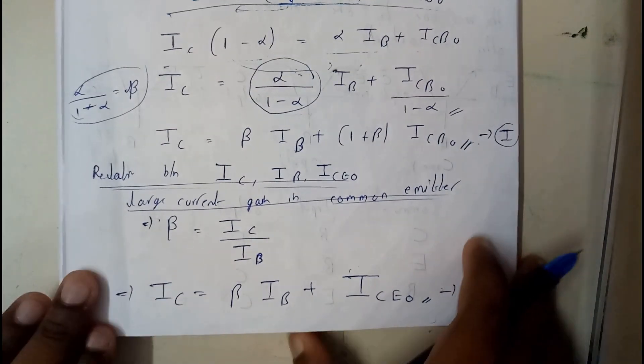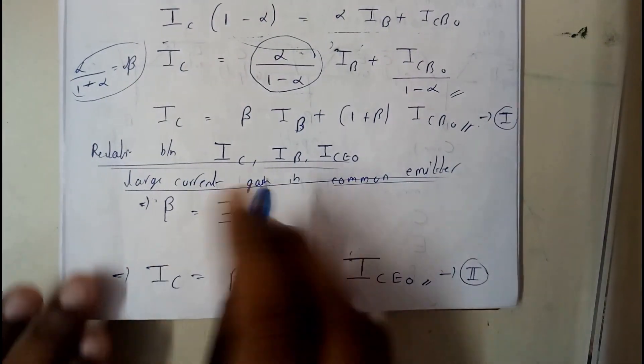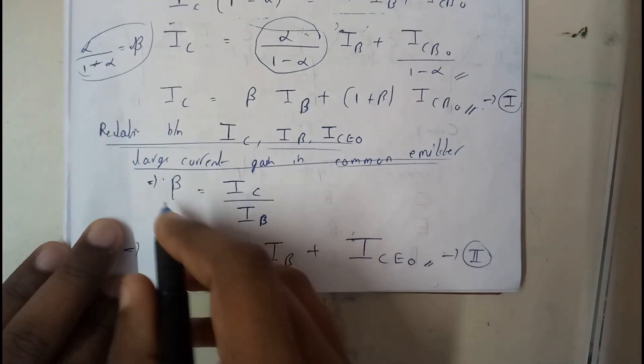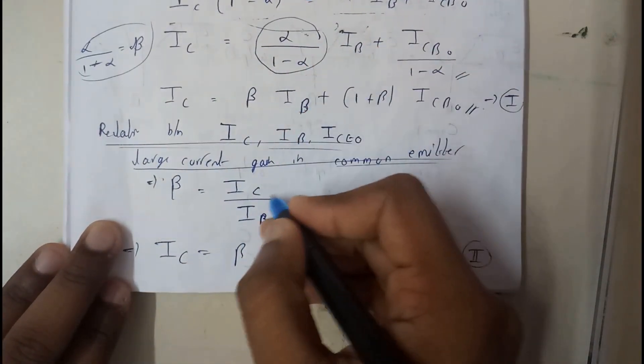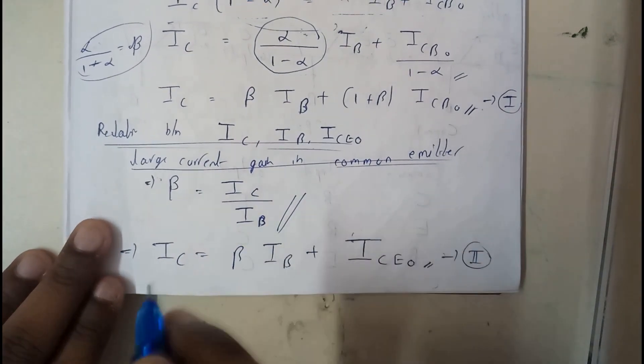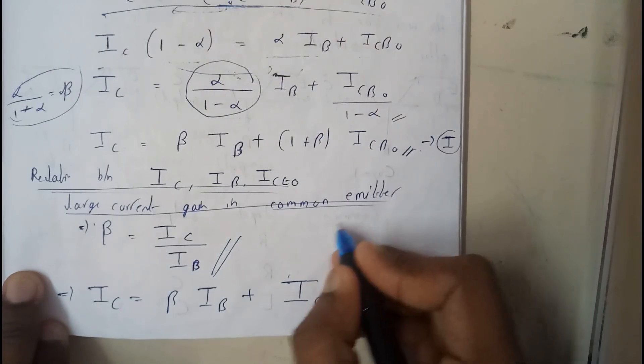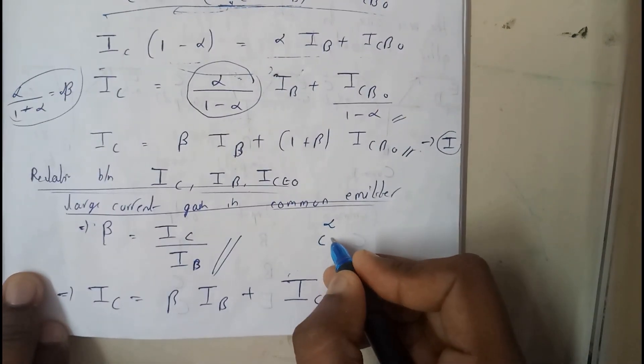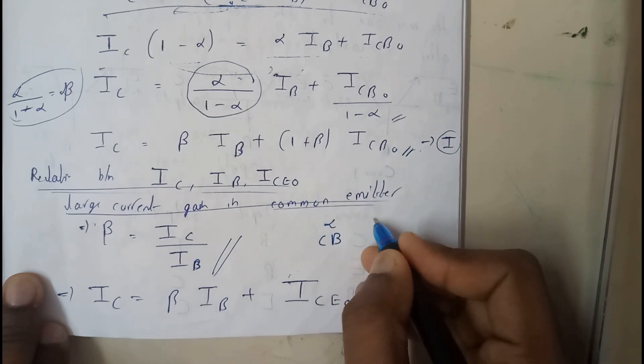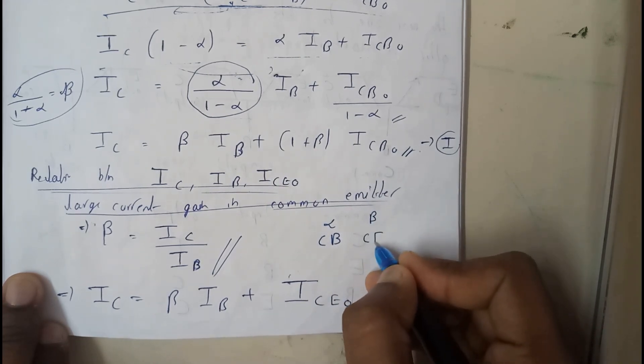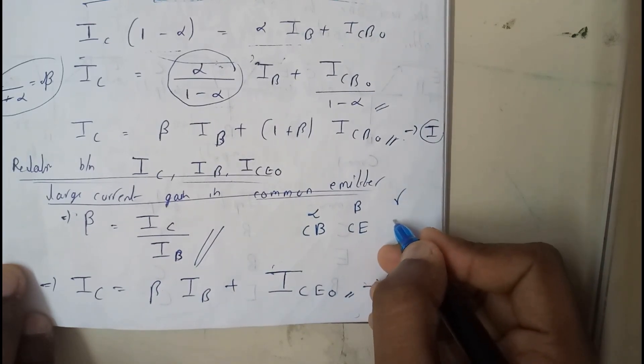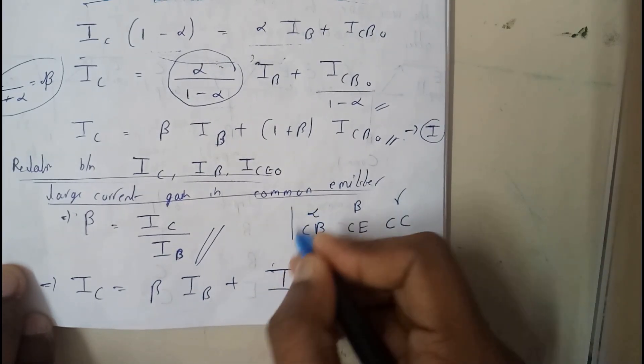Now I hope everyone got a small idea. So if you want to write the relation between IC, IB and ICE node, basically we know beta is equal to IC by IB. You remember that alpha is for common base.